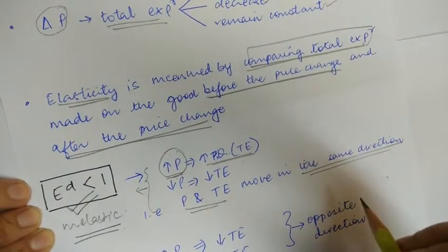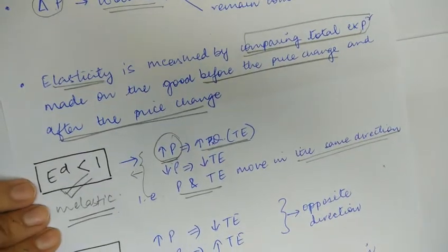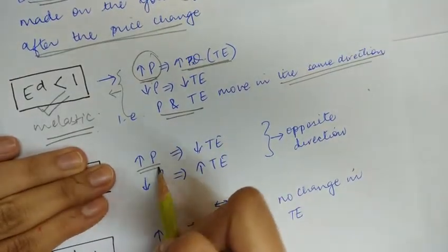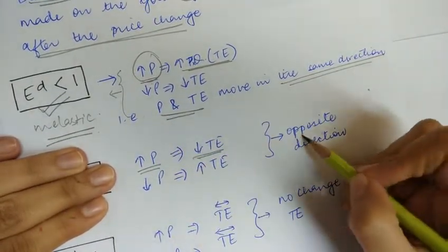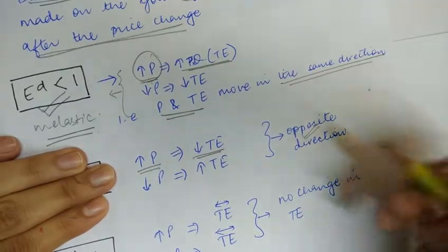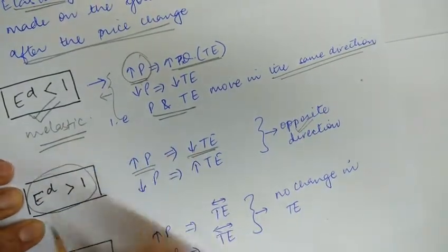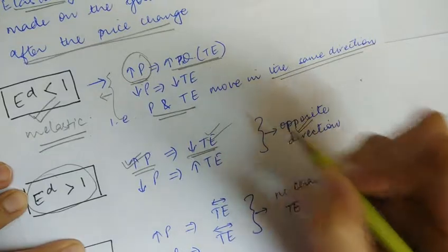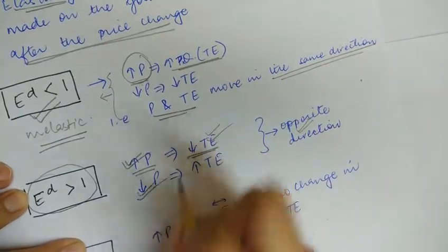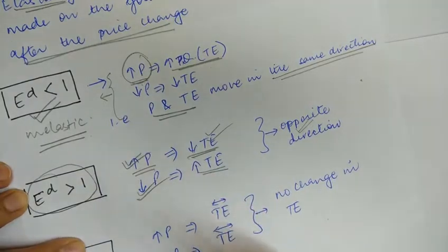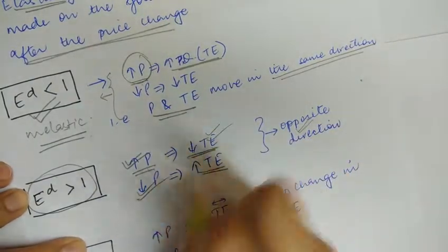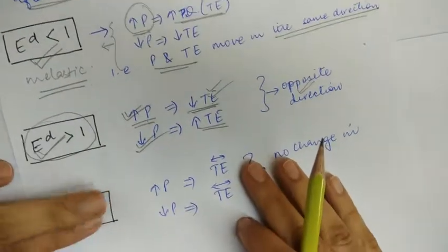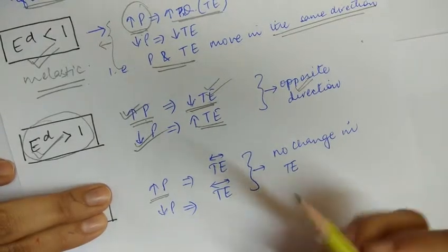When the price of the commodity and the total expenditure move in the opposite direction, we say that the elasticity of demand is greater than one. With an increase in price, the total expenditure will fall, and with a decrease in price, the total expenditure will increase. Since they move in opposite directions, the elasticity of demand is greater than one.